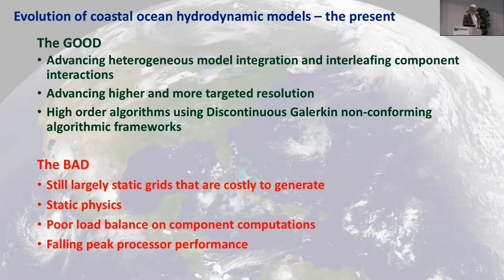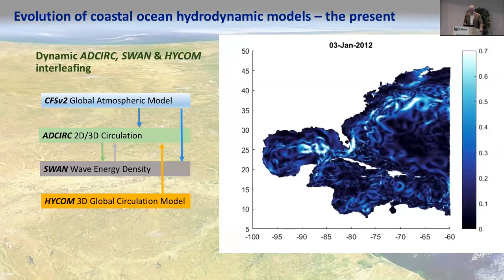The bad news is that the grids are still largely static, the physics is static — we basically decide on the physics beforehand. Load balancing is less than perfect, and another thing to worry about is falling peak performance on the processors. A lot of these things are pretty ubiquitous across all modeling communities.